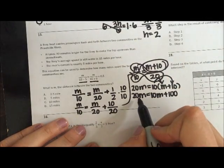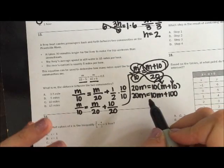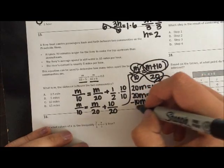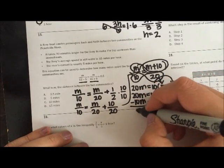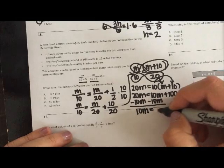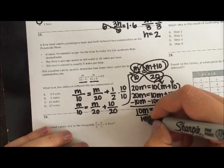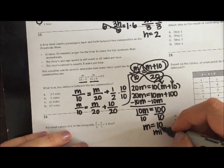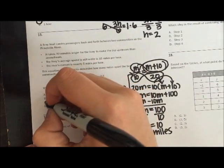So now I have m's on the left, m's on the right. I want all the m's to be together. So I'm going to go ahead and subtract this 10m, so it's with the 20m. Well, 20 minus 10 is 10. And then I can ultimately divide by this 10. And I get m is 10 miles. Is that one of our options? Well, yes, 10 miles.